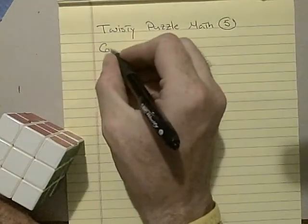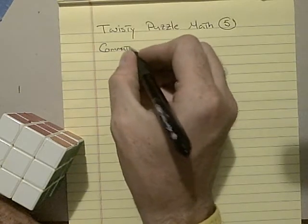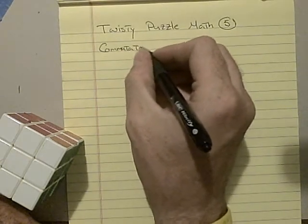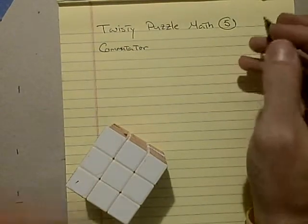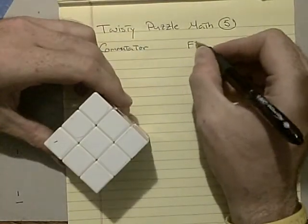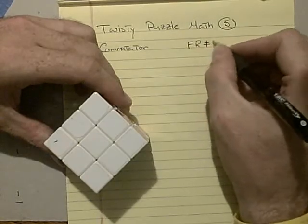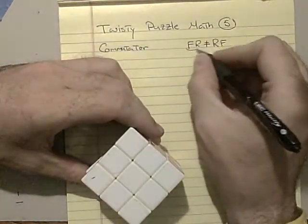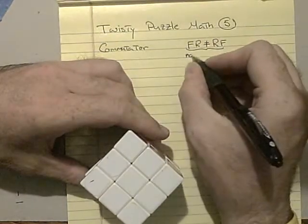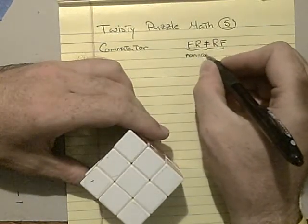I want to talk about commutators and commutativity. So, the cube group is non-commutative. FR does not equal RF on the cube. You can check this. This means the group is non-commutative. It matters what order you do things.